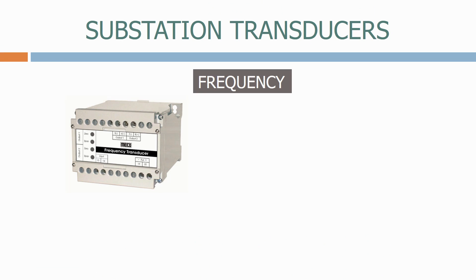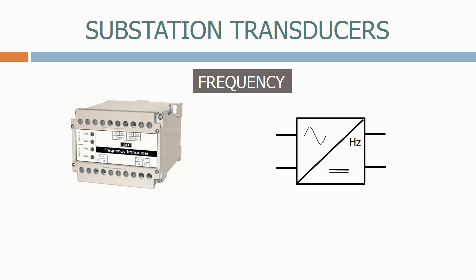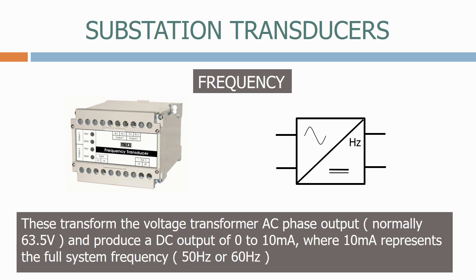Next we have a frequency transducer. This is the symbol we normally use. These transform the voltage transformer AC phase output, normally 63.5V, and produce a DC output of 0-10mA, where 10mA represents the full system frequency, either 50Hz or 60Hz.